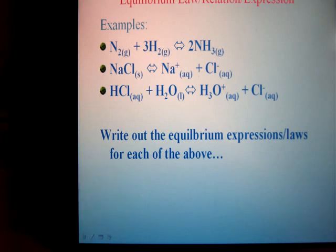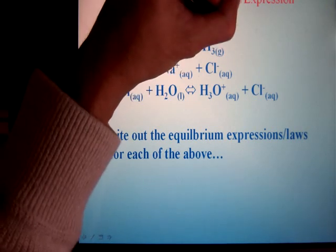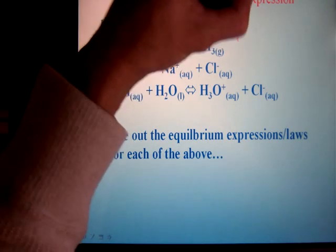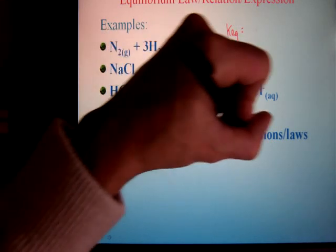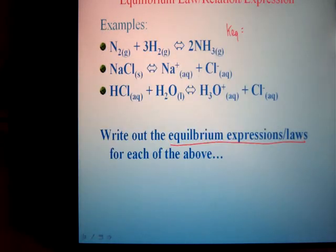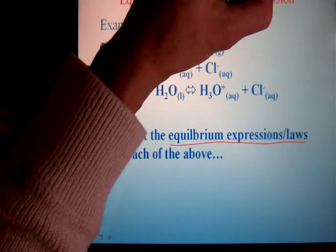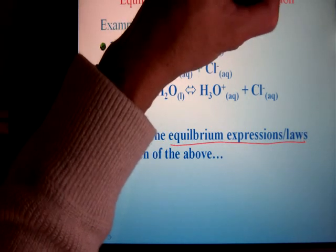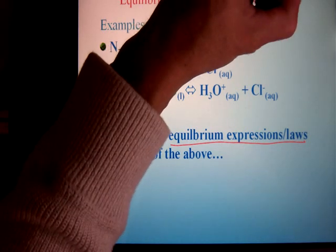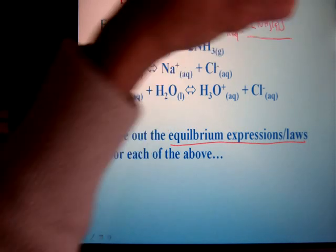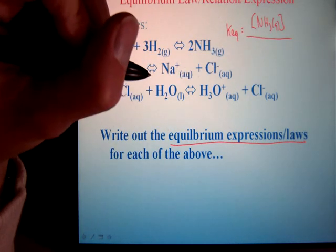In the first one, formation of ammonia, we always start by writing out what we call the equilibrium expression or equilibrium law. That is the actual chemical expression involving the products and reactants. It's always products first, products over reactants, watch your states of matter.